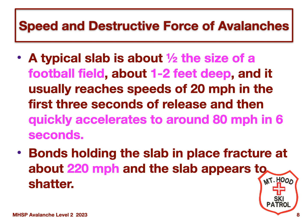A typical slab is quite large — half the size of a football field and one to two feet deep — and reaches a speed of about 80 miles per hour in six seconds. As the slab accelerates, it appears to shatter like a pane of glass. It is not likely you'll be able to outrun a slab if it breaks with you on it. So the best strategy is not to get caught in an avalanche to begin with.